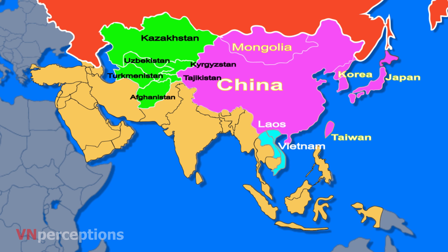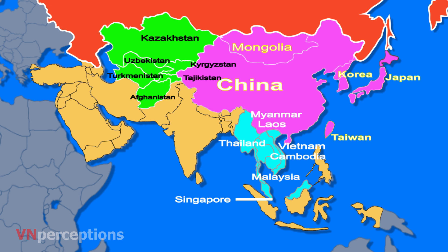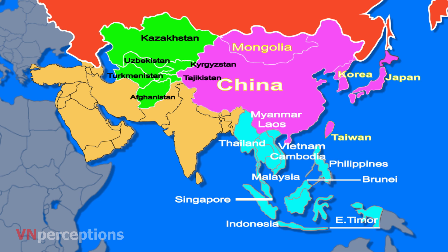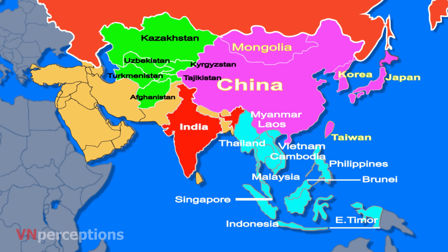The Southeast Asian countries are Vietnam, Laos, Cambodia, Thailand, and Myanmar. The southern part consists of the island countries of Malaysia, Singapore, Brunei, Indonesia, East Timor, and the Philippines.